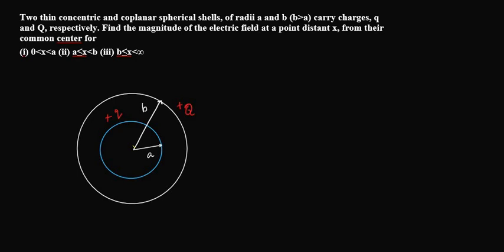Two thin concentric and coplanar spherical shells of radii a and b, where b is greater than a, carry charges q and capital Q respectively. Find the magnitude of the electric field at a point distance x from their common center for the following cases.